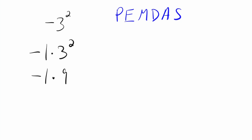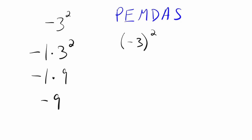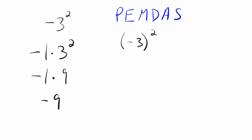Now we're ready to do multiplication: negative one times nine is negative nine. As opposed to the other problem — which again sounds exactly the same, negative three squared — by having the parentheses there, it holds the negative and the three together. It's saying whatever you're going to do, you use the whole thing. So when we square the entire quantity of negative three, that means negative three times negative three, and we do in fact get positive nine as our answer.